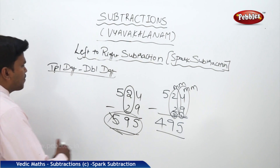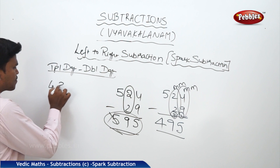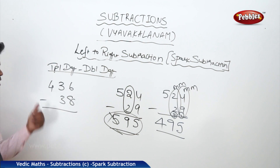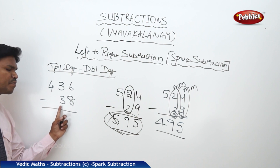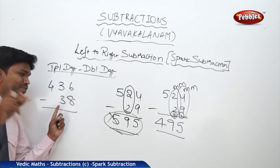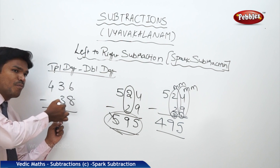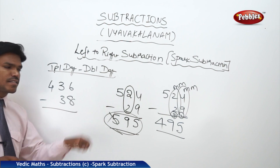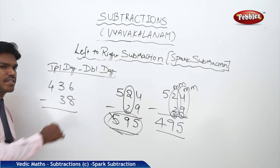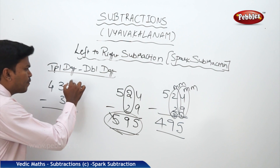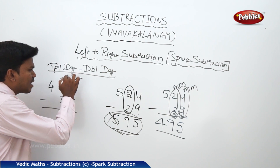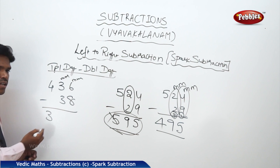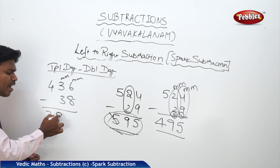Now one more example. Suppose 436 minus 38. Same way — drop 4, but before dropping 4, match or mismatch? We cannot say, because both are getting the same digits above and below. Go for next — 6 and 8. They are mismatched. If this is mismatched, the previous pair is also mismatched. So 4 becomes 3. And obviously the middle digit becomes 9.